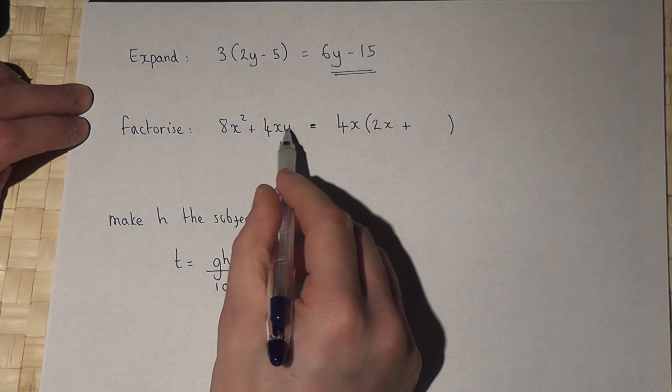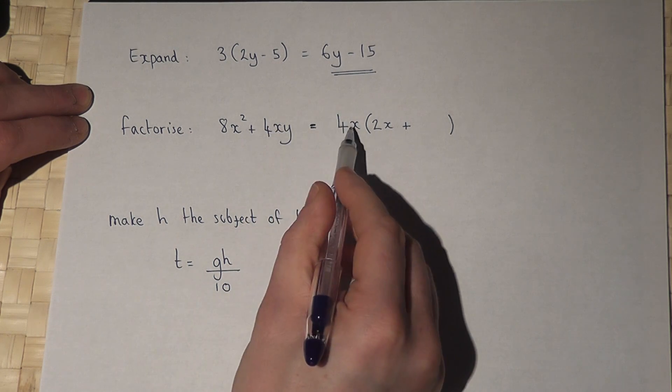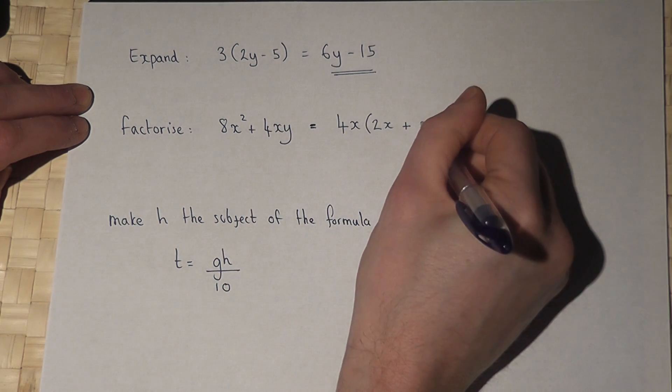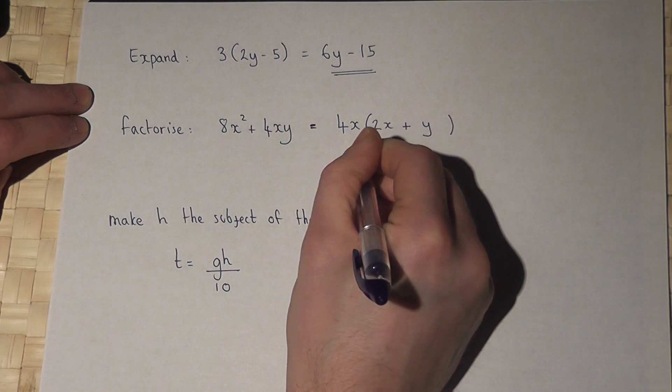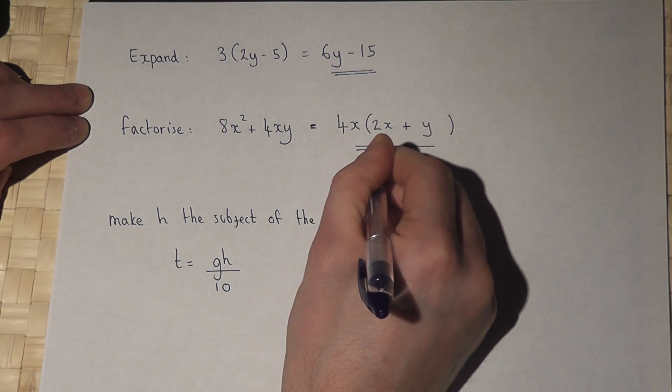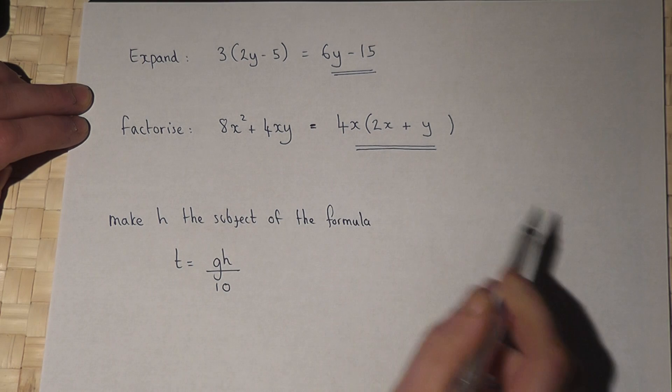Now here is a 4xy. Here's the 4x, so to get 4xy requires a y. So I have therefore factorised the given expression.